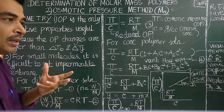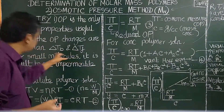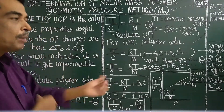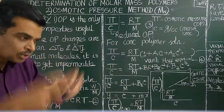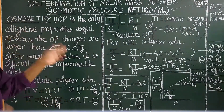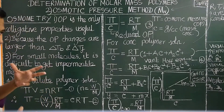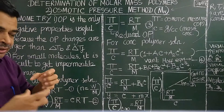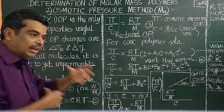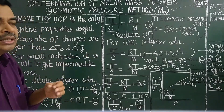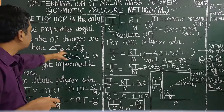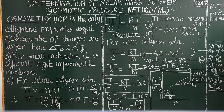Why is osmotic pressure preferred? Depression of freezing point and elevation of boiling point are also colligative properties, but they are not very useful because the changes in osmotic pressure are much larger. The changes are larger than elevation of boiling point and depression of freezing point, so the change in osmotic pressure can be accurately measured, whereas elevation of boiling point or depression of freezing point are very very small and cannot be measured accurately. Therefore, molar masses of polymers cannot be determined by these methods.